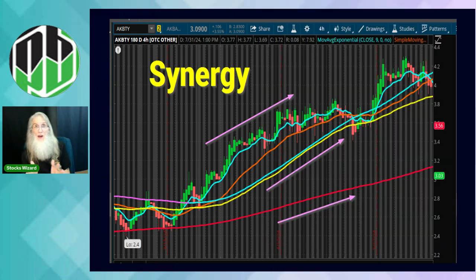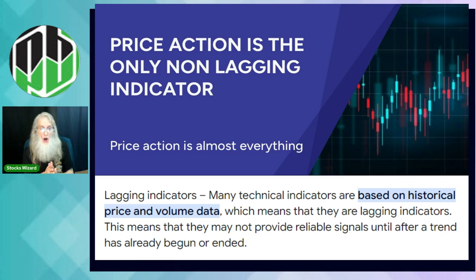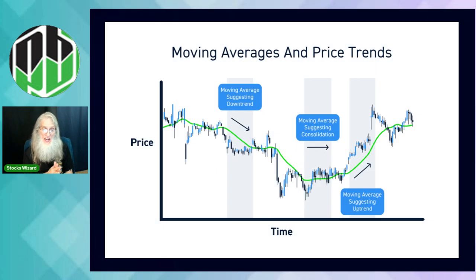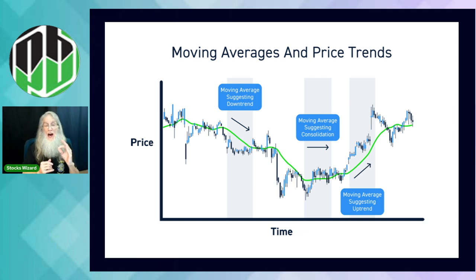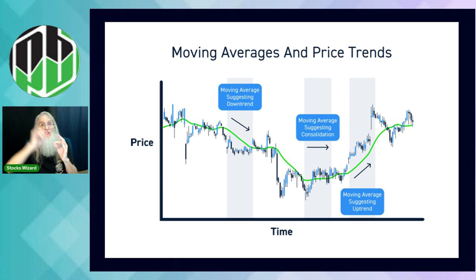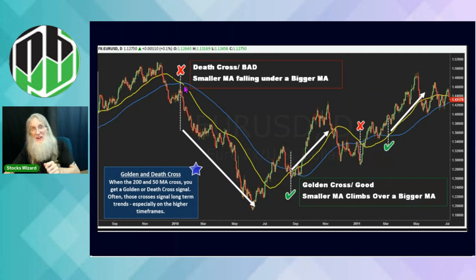Even though MAs are lagging indicators, they still give us a lot of information right now. We can glean trend identification — very important. The MAs will tell you when a stock is about ready to rise because of crossovers. When everything is in a downtrend, your 9-day MA is at the bottom, your 20 above it, then the 50 and 200. The 9-day has to get on top of everything for this to become a strong chart. These are called crossovers — the death cross and the golden cross.